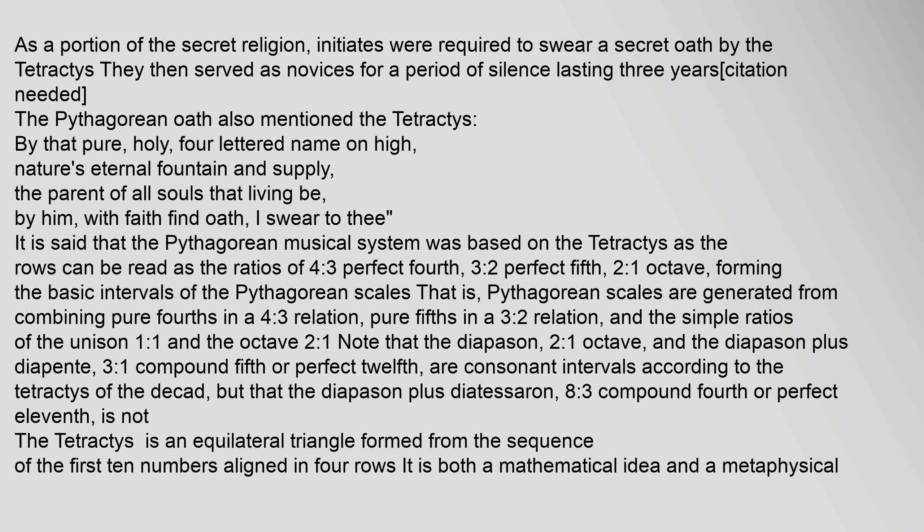It is said that the Pythagorean musical system was based on the Tetractys, as the rows can be read as the ratios of four to three (perfect fourth), three to two (perfect fifth), two to one (octave), forming the basic intervals of the Pythagorean scales. Pythagorean scales are generated from combining pure fourths in a four-to-three relation, pure fifths in a three-to-two relation, and the simple ratios of the unison (1:1) and the octave (2:1). Note that the diapason (2:1 octave) and the diapason plus diapente (3:1 compound fifth or perfect twelfth) are consonant intervals according to the Tetractys of the Decad.